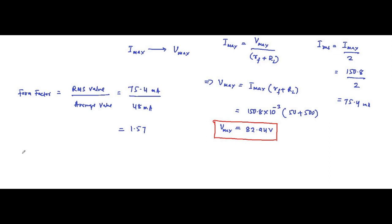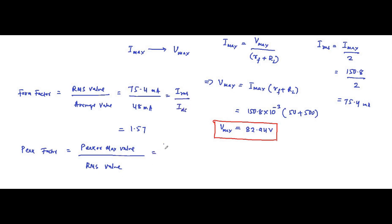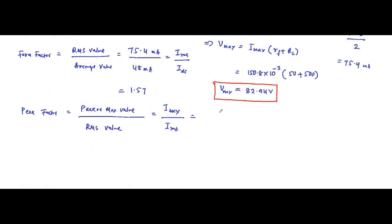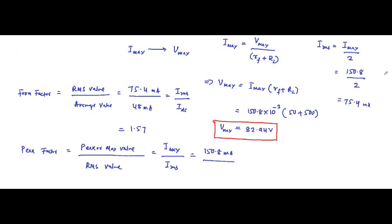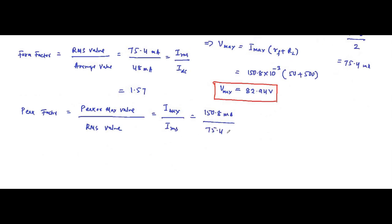The peak factor is defined as the ratio between the peak or maximum value of current divided by the RMS value. Here it is Imax divided by IRMS. Imax is 150.8 milliampere and IRMS is 75.4 milliampere — simply Imax divided by 2. This gives a peak factor equal to 2.